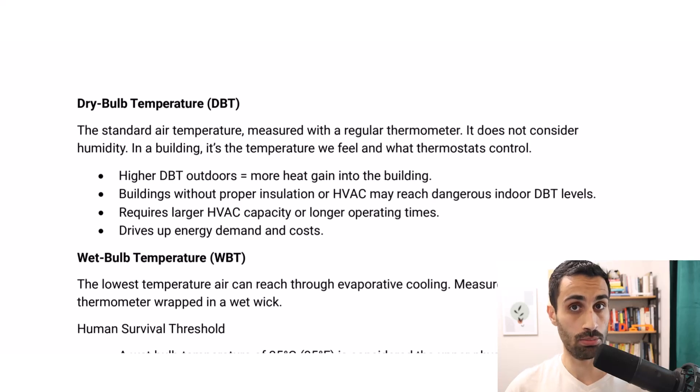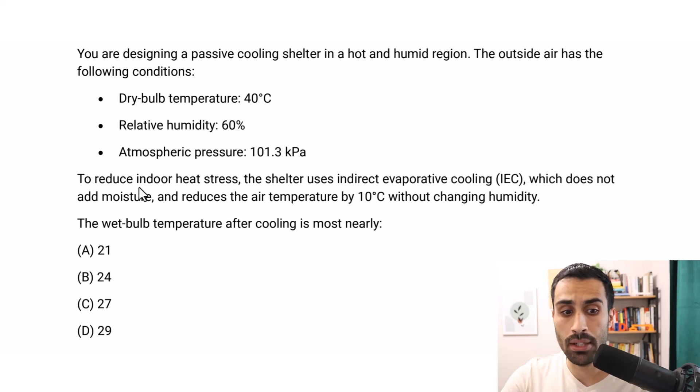Let's define some key terms. First one, dry bulb temperature. This is the standard air temperature measured with a regular thermometer. It does not consider humidity. In a building, it's the temperature we feel and what the thermostats control. Higher dry bulb temperature outdoors gives us more heat gain into the building, and that increases the heat stress on people in the building, on the occupants.